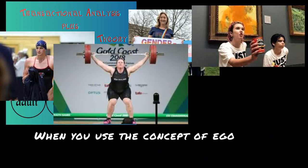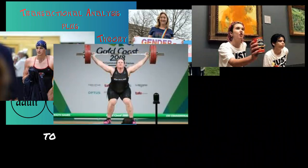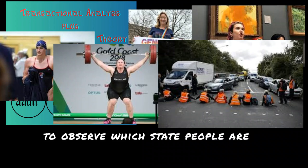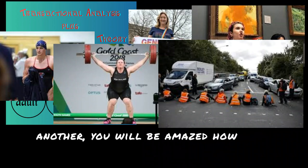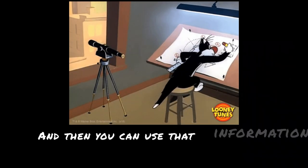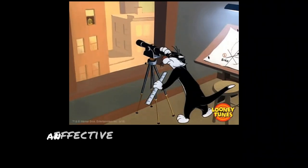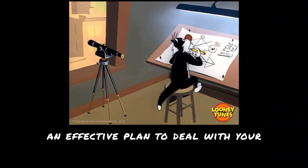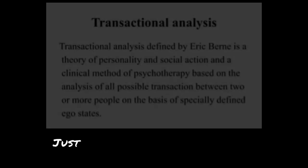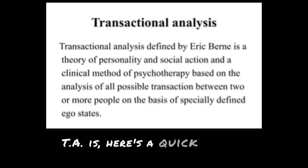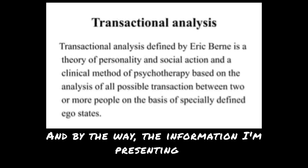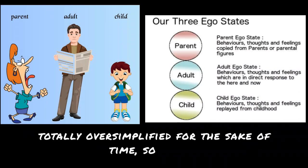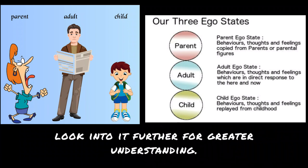When you use the concept of ego states and begin to observe which state people are in when relating to one another, you will be amazed how much sense it makes. You can then use that information to devise an effective plan to deal with your situation. Just in case you don't know what TA is, here's a quick synopsis — the information I'm presenting is totally oversimplified for the sake of time, so please look into it further for greater understanding.